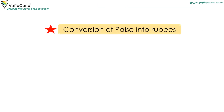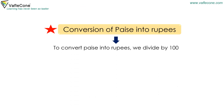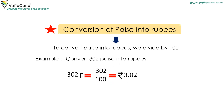Conversion of paise into rupees. To convert paise into rupees, we divide by 100. For example, convert 302 paise into rupees. 302 paise is equal to 302 divided by 100, which is equal to rupees 3.02.